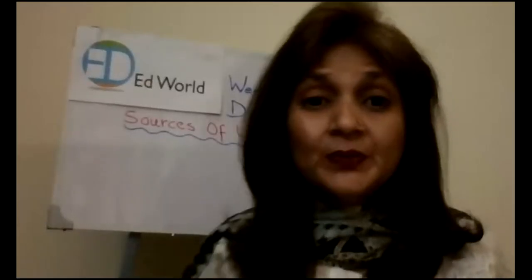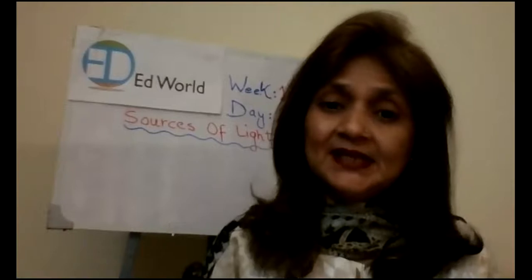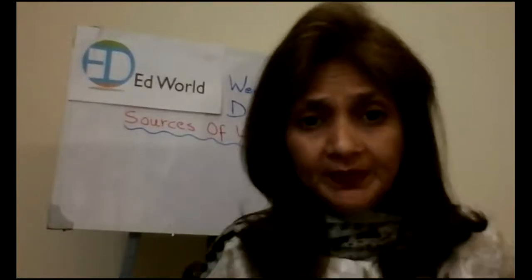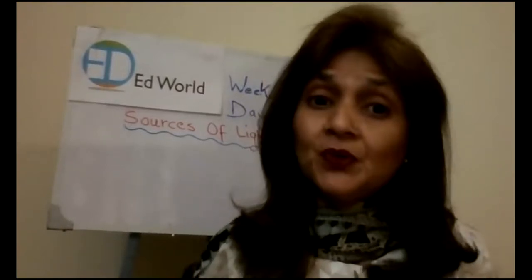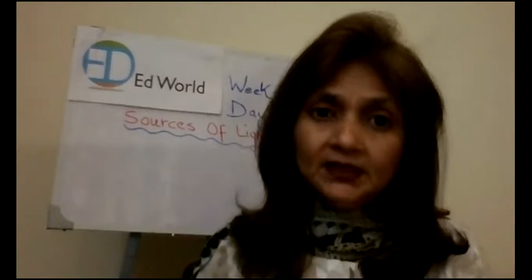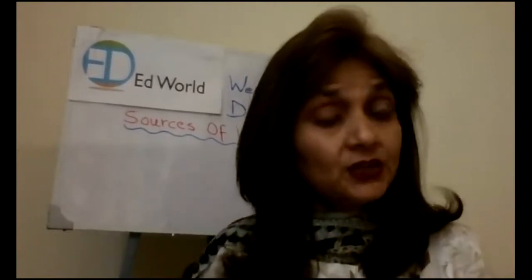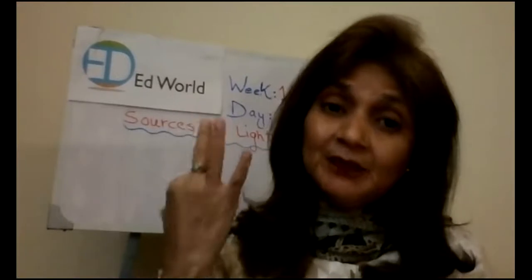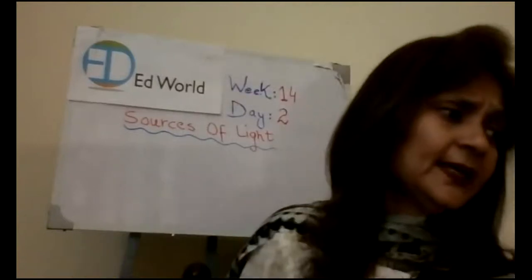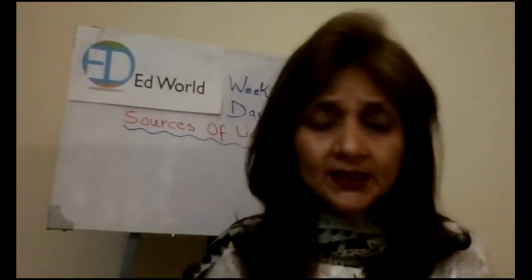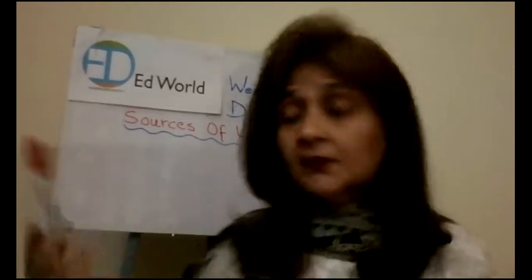Welcome back students to your science lesson. Now tell me class, what was the topic that we did yesterday in your science lesson? It was light. We are doing the topic light these days, we started it this week. And what we did actually, we answered the three main questions of light — from where do we get light, how light gets around, and other questions. You have also done the sources of light.